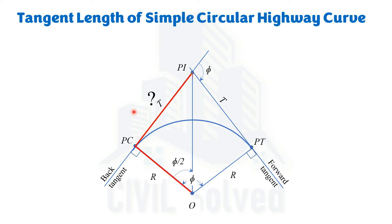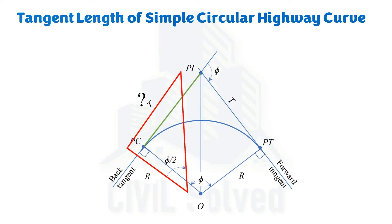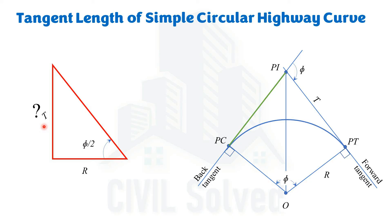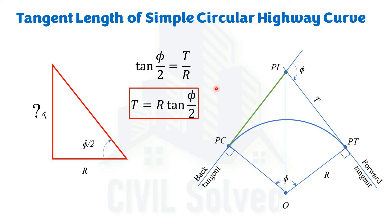The tangent length can be calculated by considering this right angle triangle — the one shown with the red line — O, PC, PI. The tangent length is the perpendicular of this right angle triangle, and the radius is the base. So we use the trigonometric relationship containing perpendicular and base, which is tangent. So tan(φ/2) = T/R, and by cross multiplying we get the relationship for tangent length in terms of radius and deflection angle. This is the basic equation for calculating the tangent length.